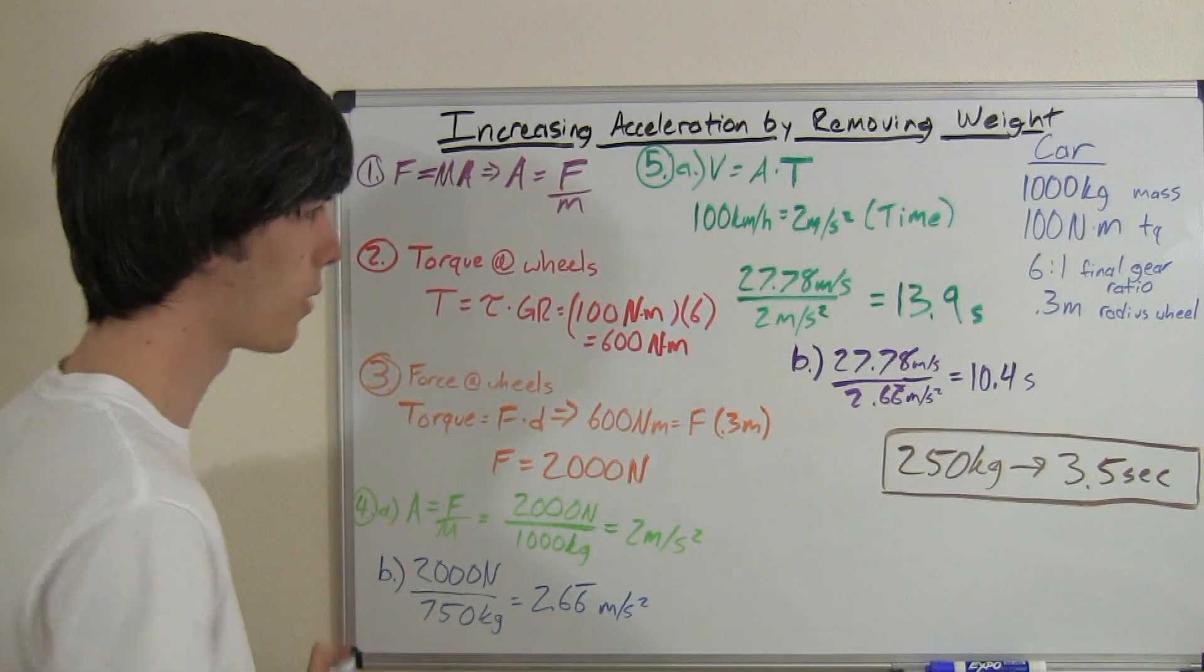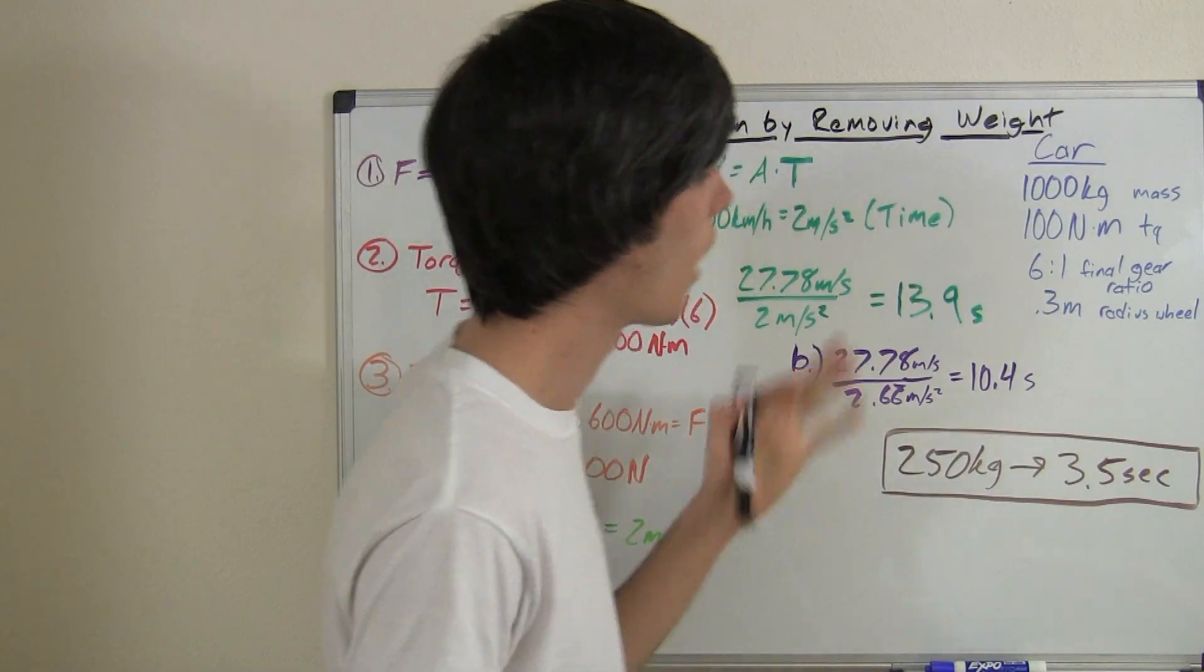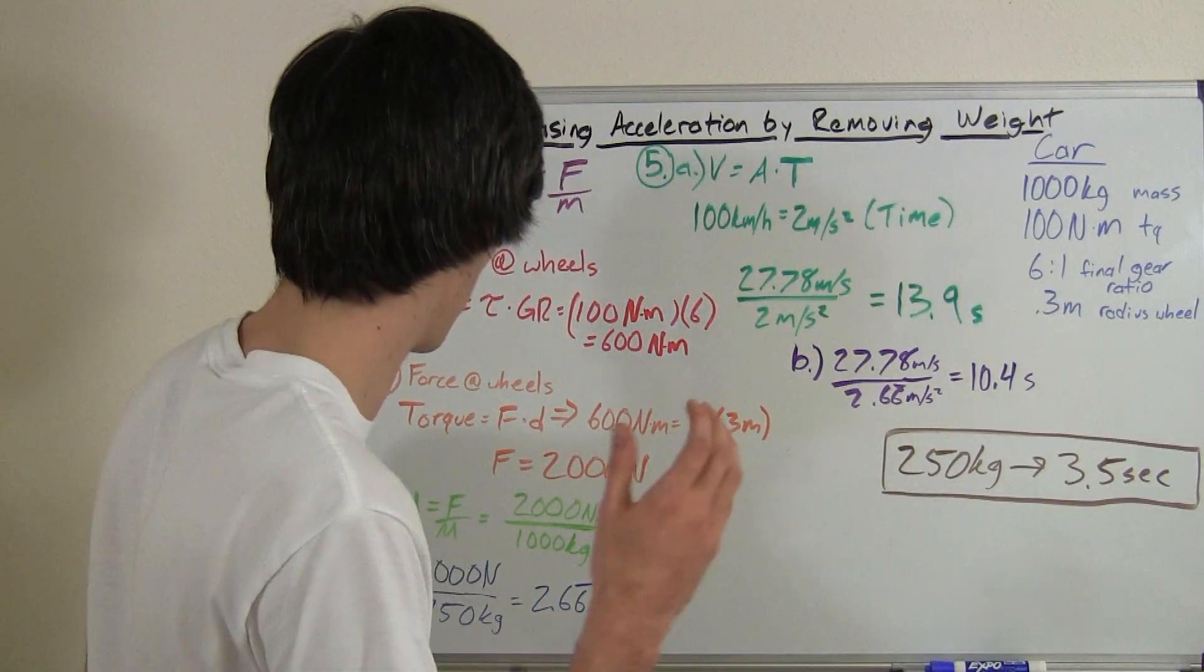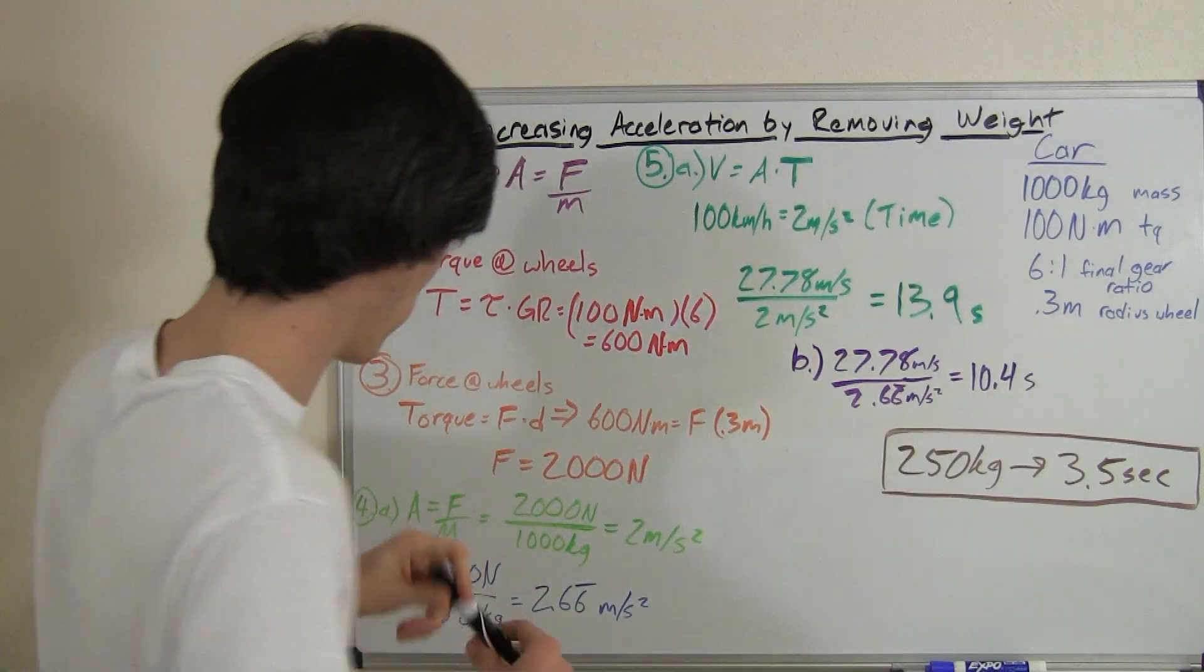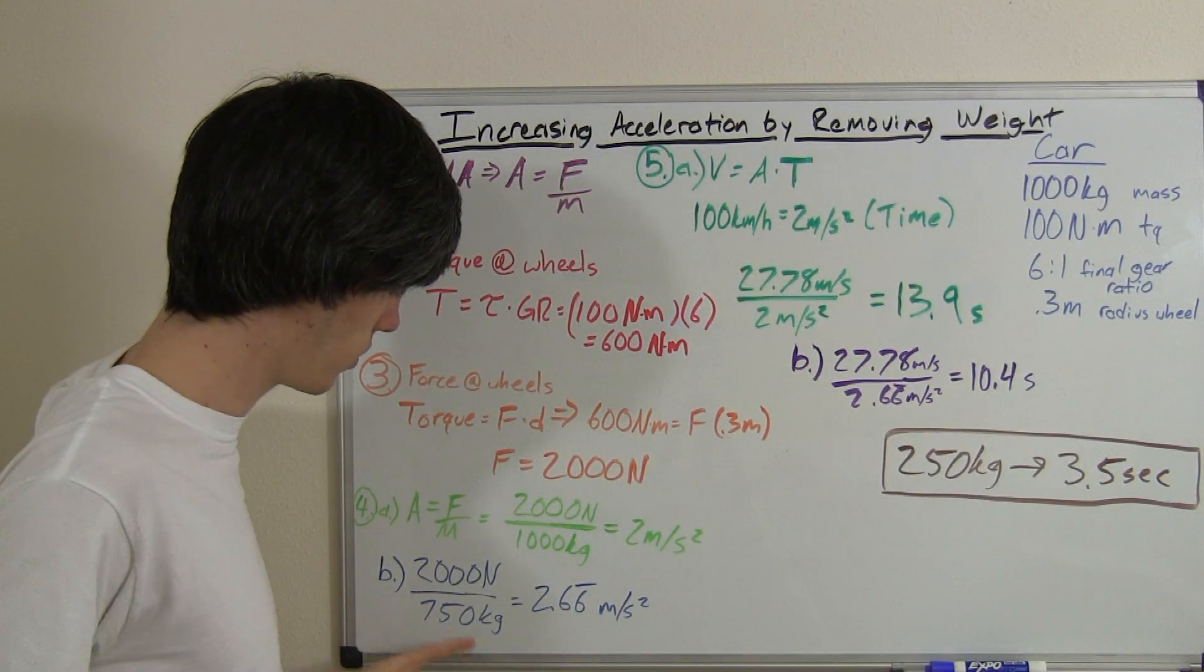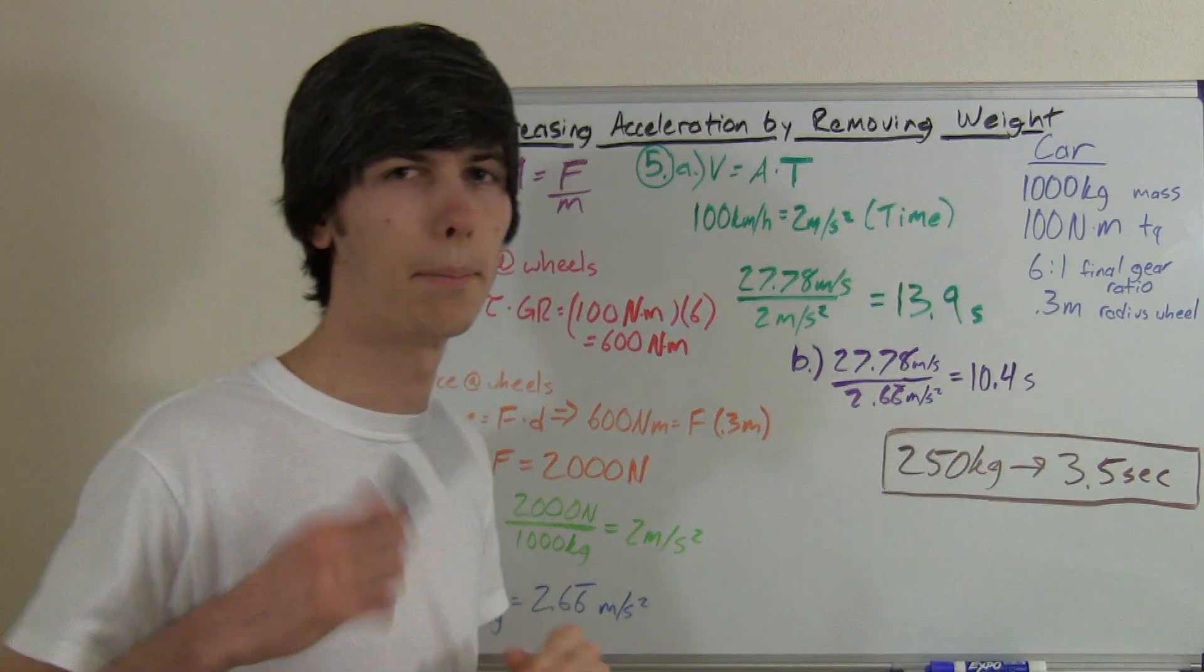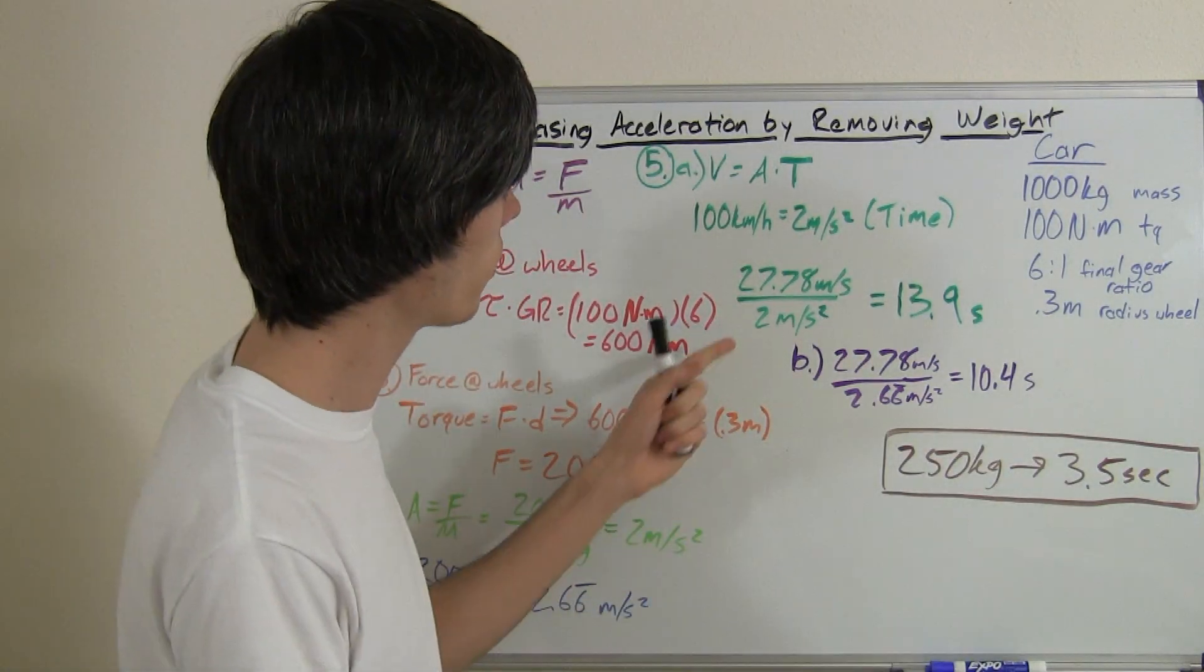Now let's say we took out 250 kilograms from that car. I don't know how we did it. Maybe we cut off the roof completely and that's how we did it. But point is we took out some weight. So we've got 2,000 newtons divided by 750 kilograms. That's going to give us 2.66 meters per second squared.